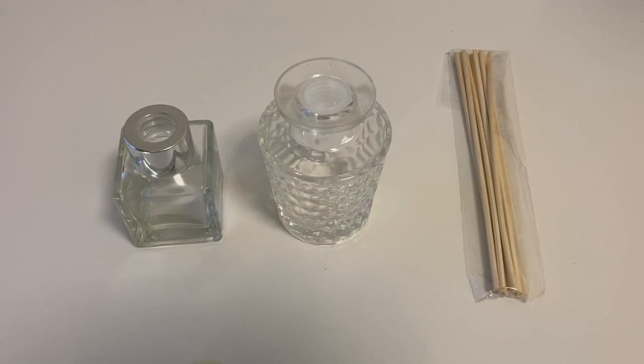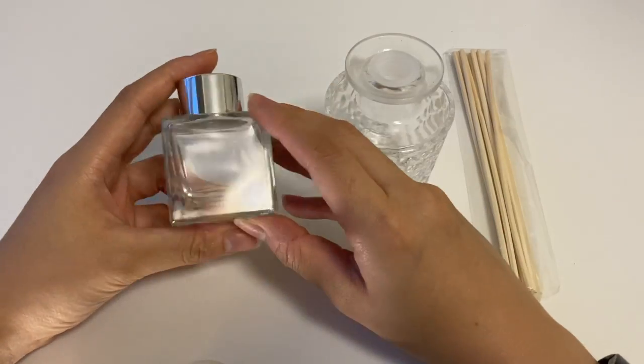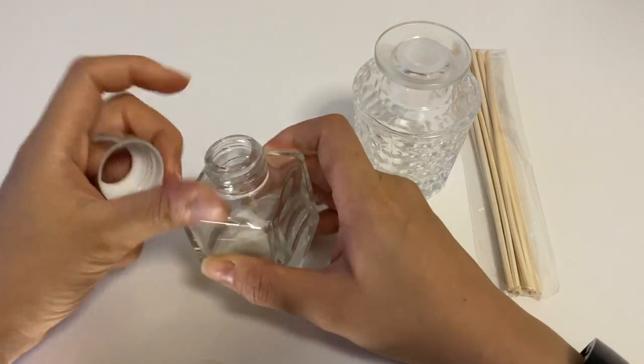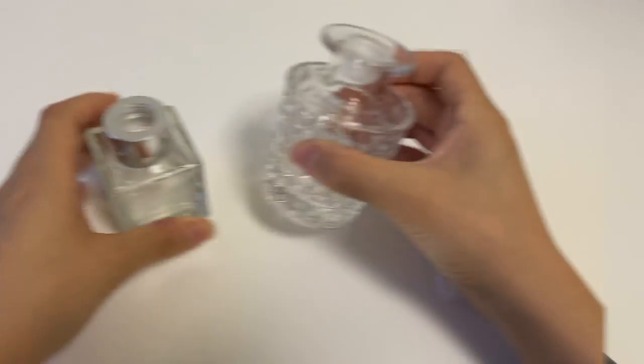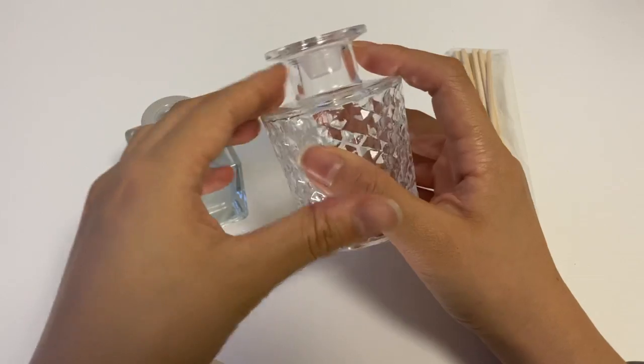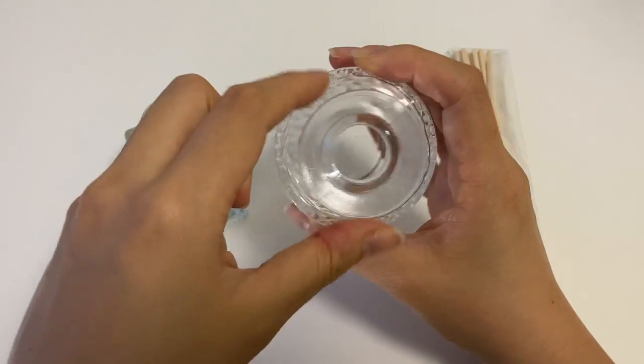To make reed diffusers you will need a bottle to fill in the liquid carrying the scent and some reeds for diffusing the scent. When choosing a bottle you will need to pick bottles with a narrow neck like this one. You can also choose fancy ones with patterns on the bottle as long as it has a narrow neck like this one.